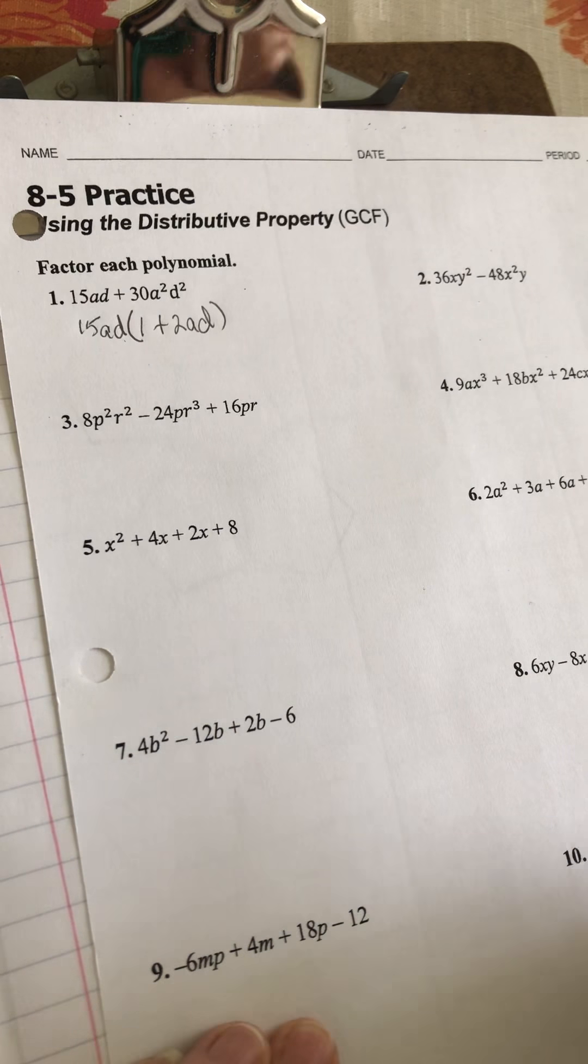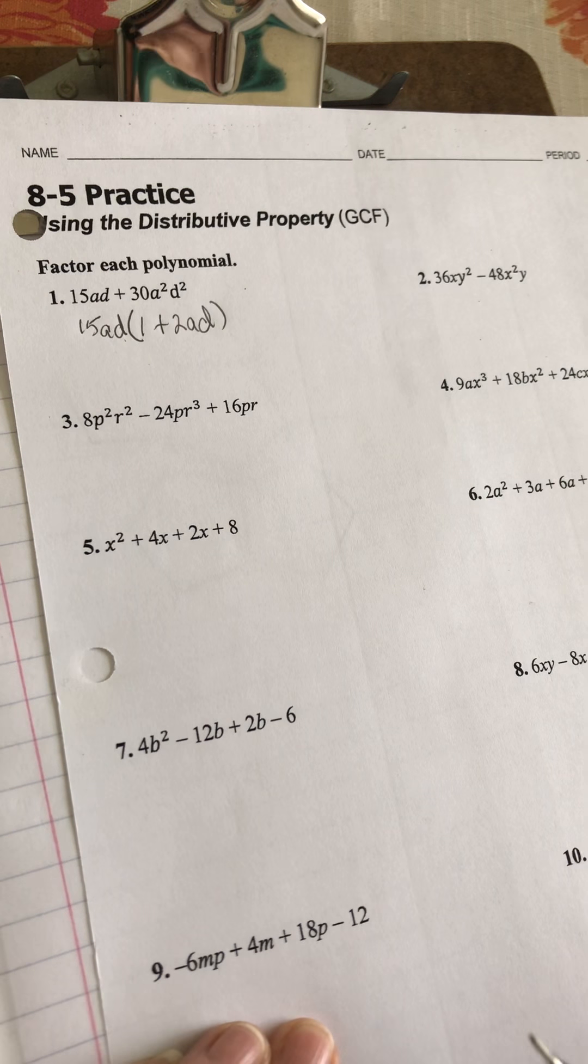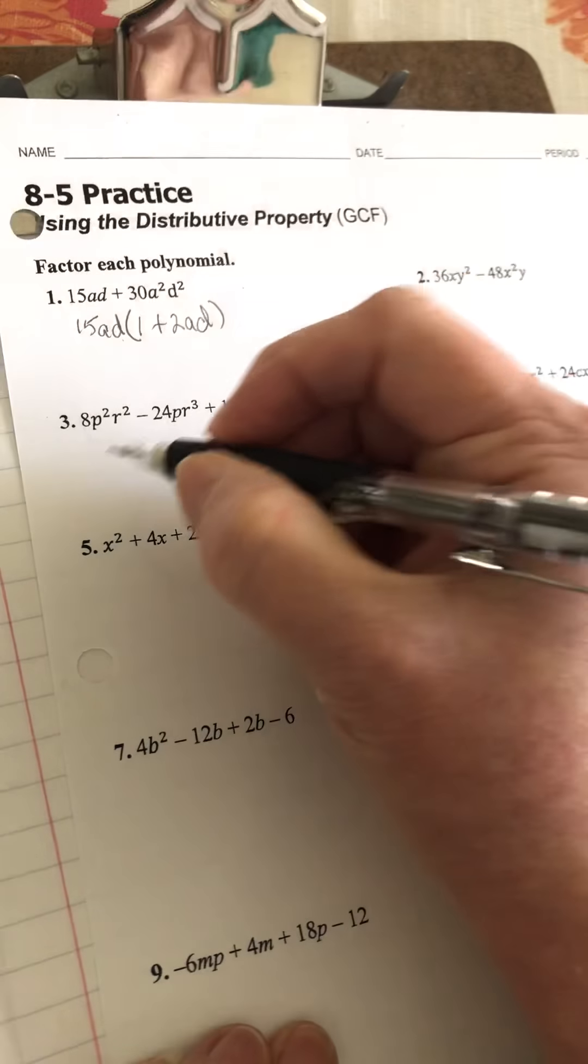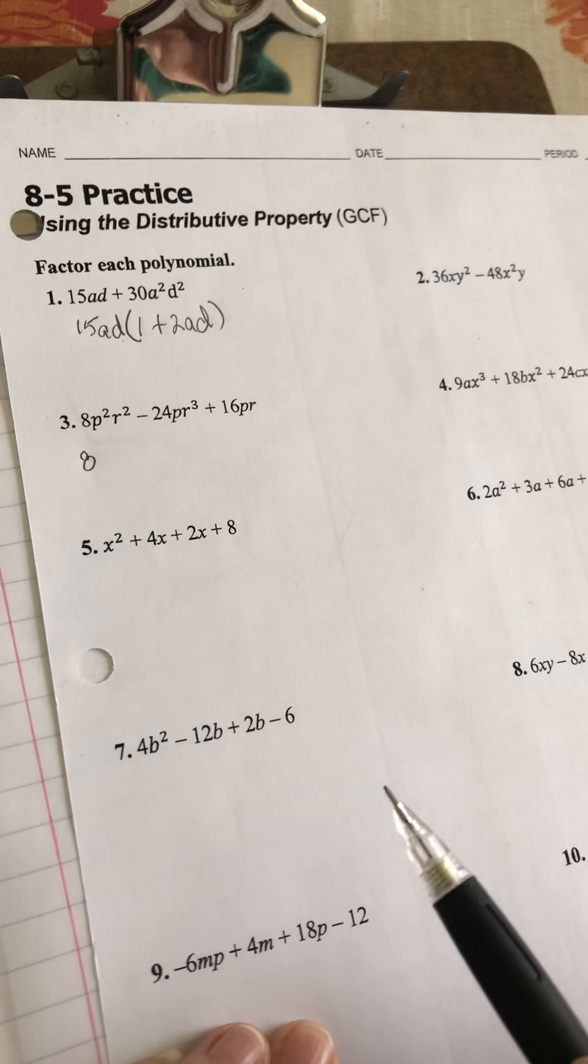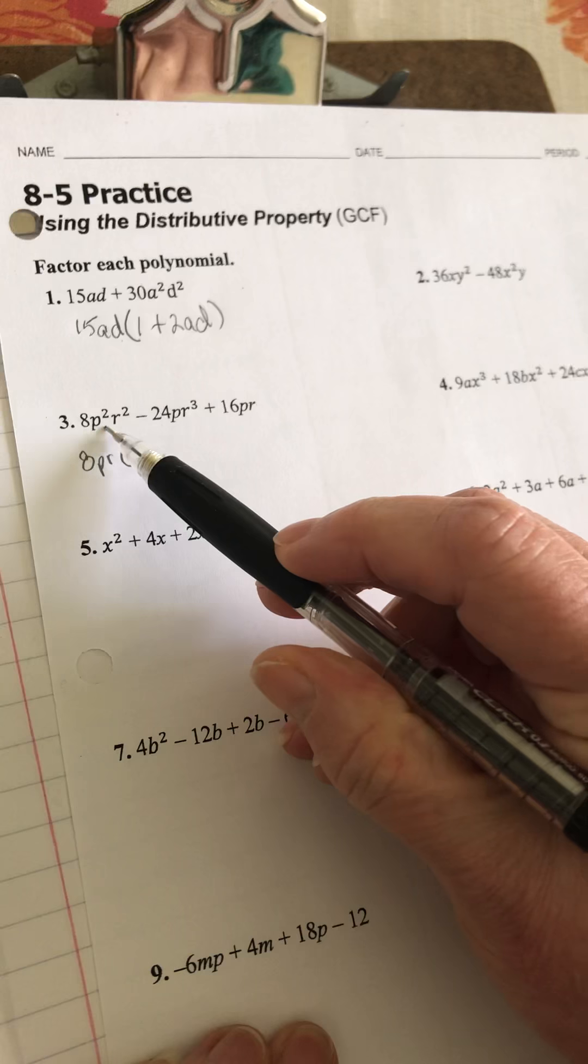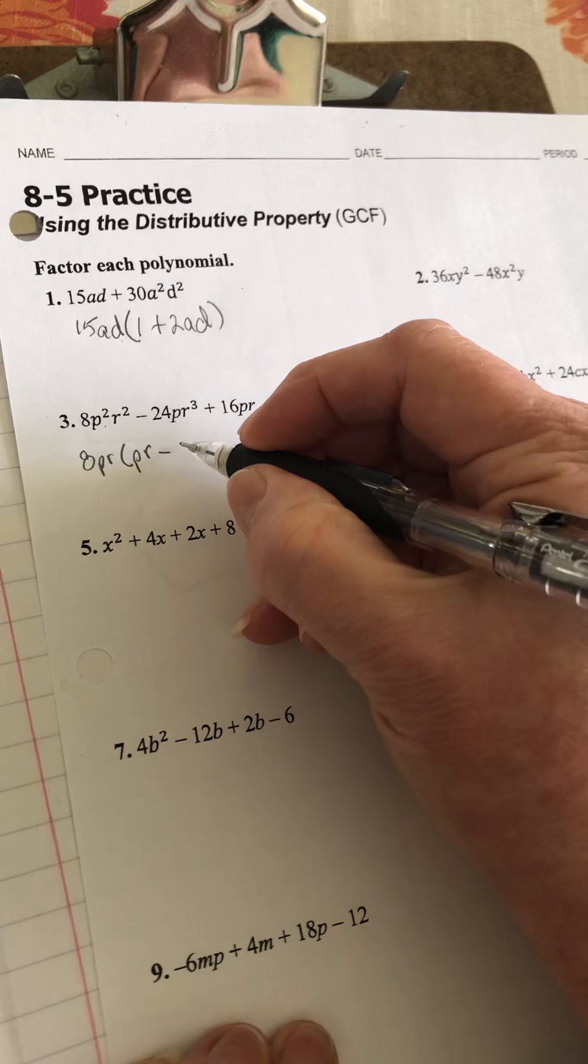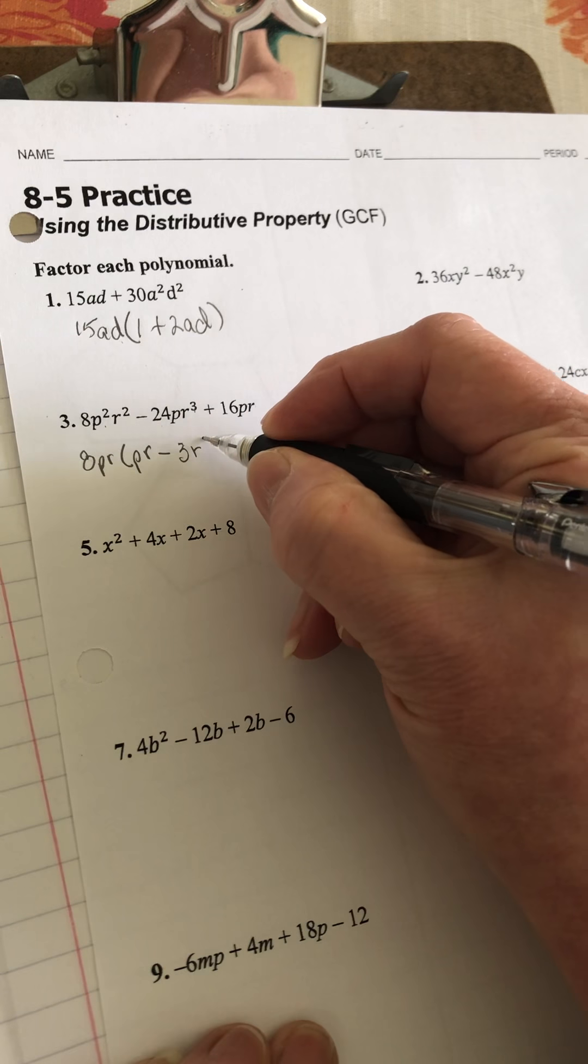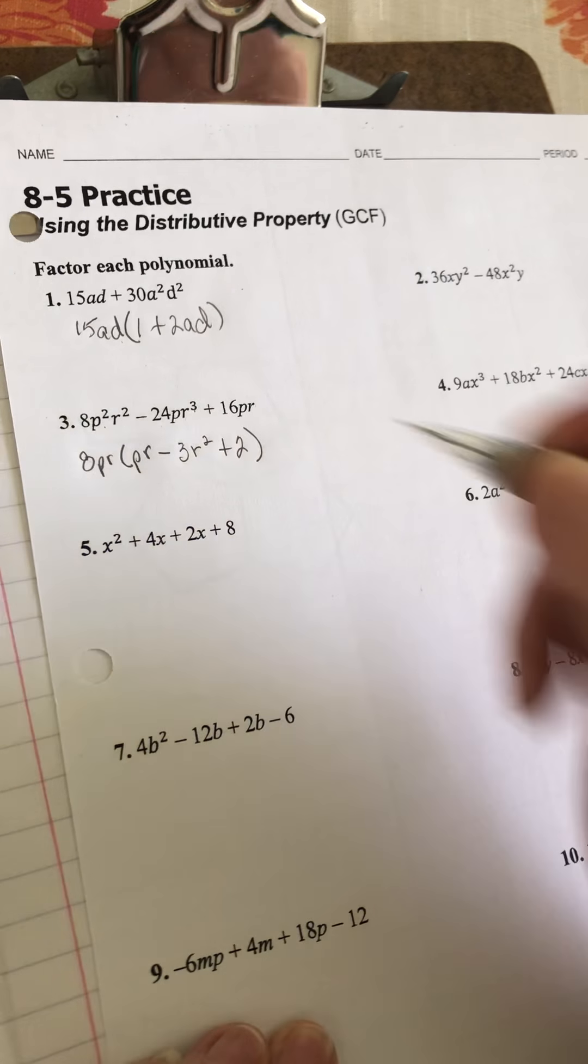When I have a binomial, I'm just looking for a GCF. When I have a trinomial, again, I'm just looking for a GCF. At number 3, I see that 8 goes into all of those numbers, so 8 is a part of my GCF. They all have 1p and 1r, so my GCF is 8pr. It goes into this, I'm going to have a p left and an r left. 8 goes into 24 three times, and I'm going to have 2rs left. 8 goes into 16 twice, and I'm not going to have any p's or rs left.